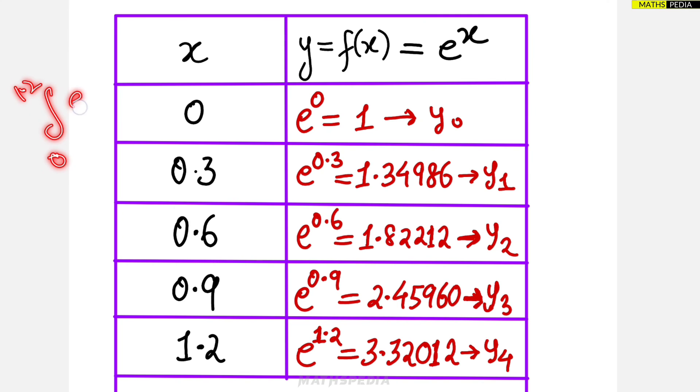0 is nothing but the lower limit, 1.2 is the upper limit. From lower limit to upper limit you have to go by taking h as the step, or h as the width. h is nothing but 0.3, so start with the lower limit, just add 0.3 which is h, you will get the next value. Then again add 0.3, keep on adding 0.3 till you get the upper limit. So from 0 we have to go to 1.2 by adding 0.3. If you see each interval, you will be getting the width as 0.3.